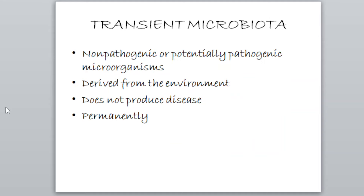Now coming towards the transient microbiota. Transient microbiota are the non-pathogenic or potentially pathogenic microorganisms — meaning they have the potential to be pathogens. Pathogens are those microorganisms that have the ability to cause disease. These transient microorganisms are derived from the environment and they do not produce disease and they do not establish permanently on any surface.